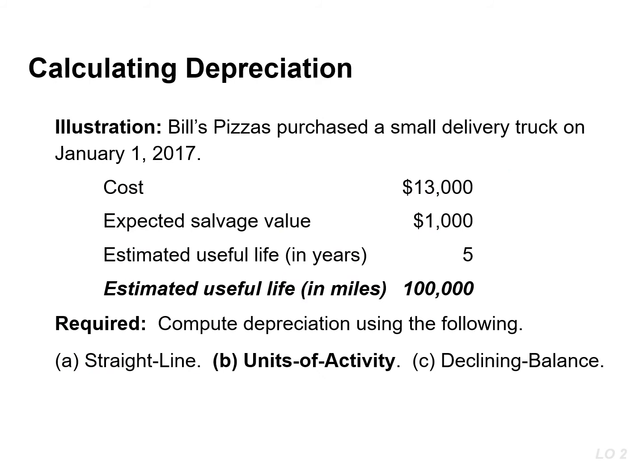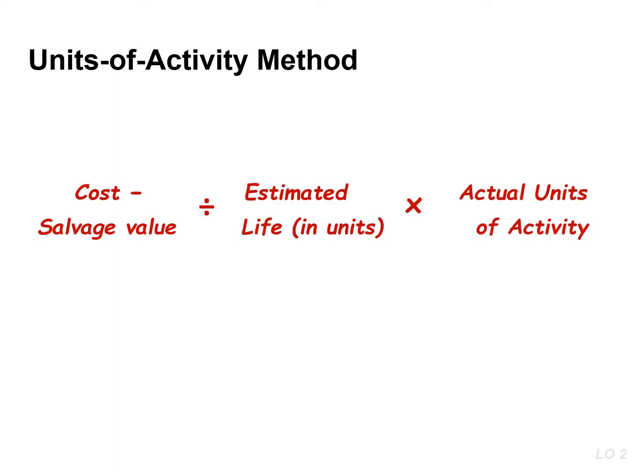Let's use the same information to illustrate the units of activity method. Useful life can be expressed in ways other than a time period. Under the units of activity method, the life of an asset is expressed in terms of the total units of production or the use expected from the asset, such as miles driven or machine hours. The formula is the cost minus the salvage value divided by the estimated life in units, multiplied by the actual units of activity.